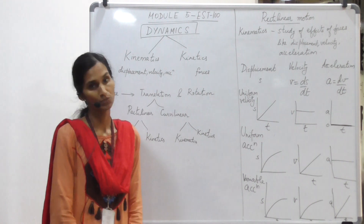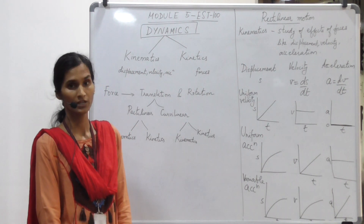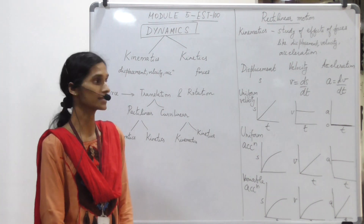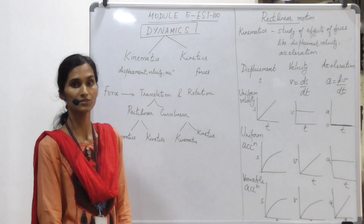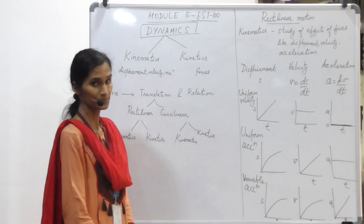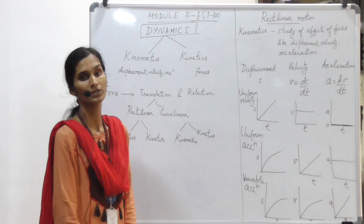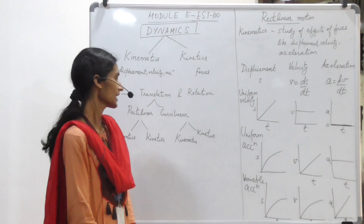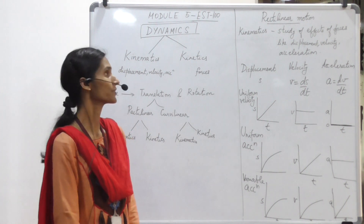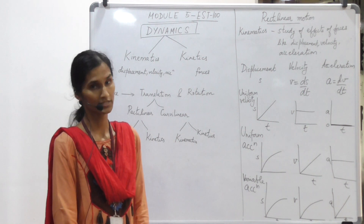When a force acts on a body it does two things: translation and rotation. In translation there are two types which we will learn: rectilinear motion and curvilinear motion. This is based on the path traversed by the object once it is acted upon by a force. In rectilinear motion we consider both the kinetics and kinematics branches of dynamics, and similarly for curvilinear motion. In this lecture we will be covering rectilinear motion and looking at problems related to it.